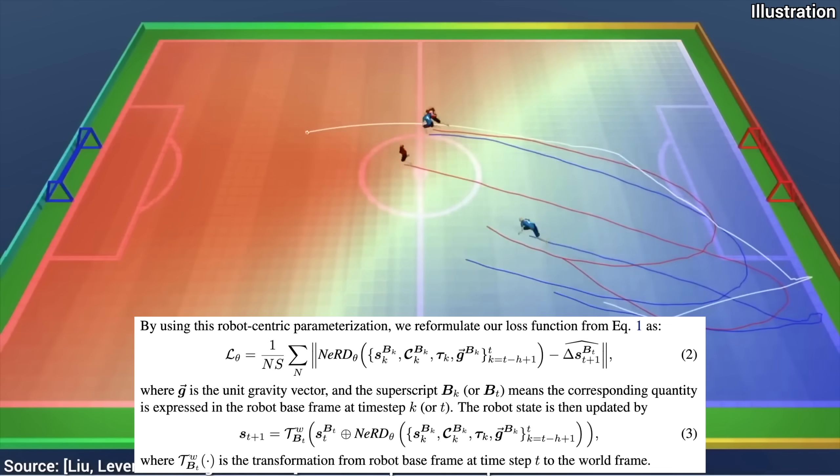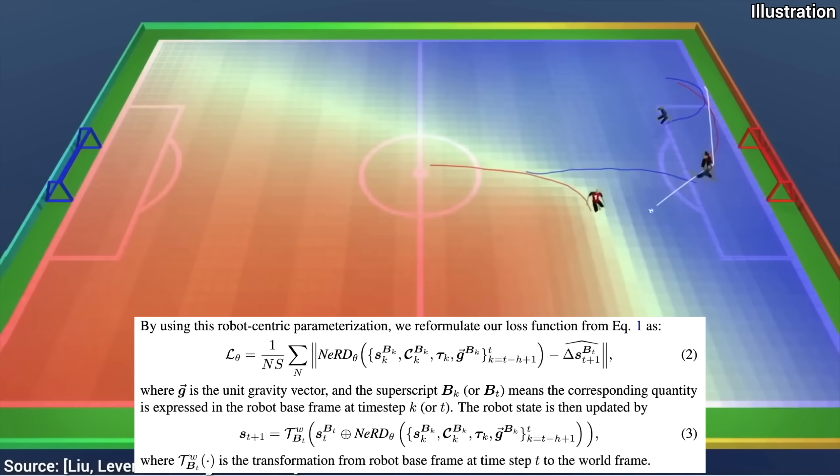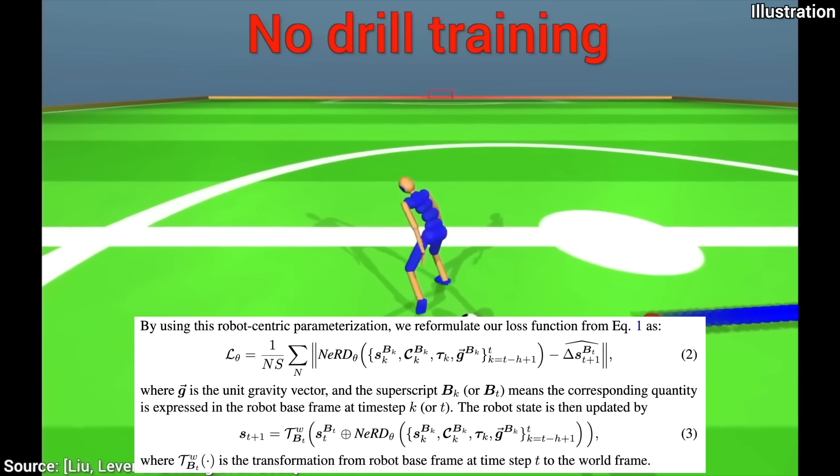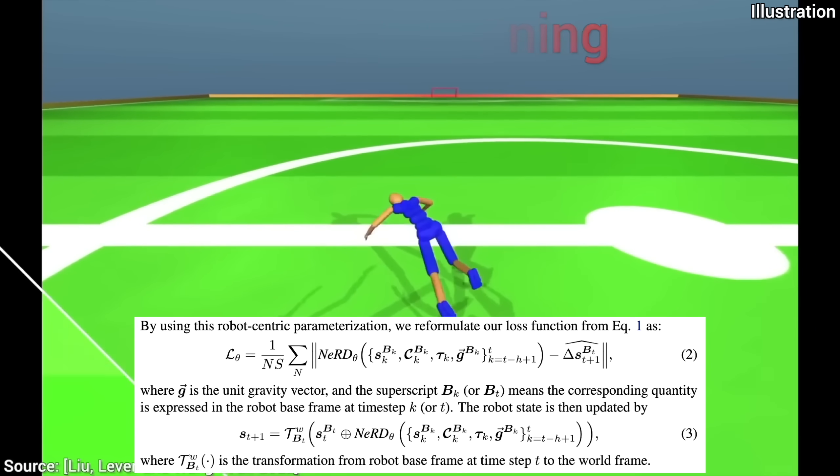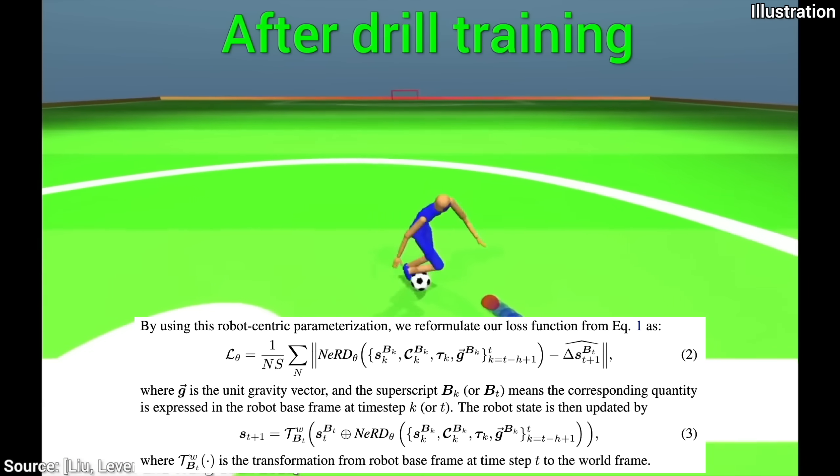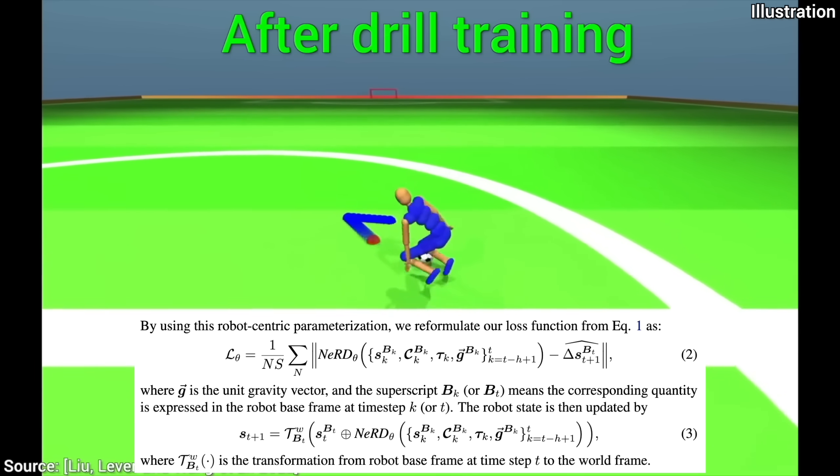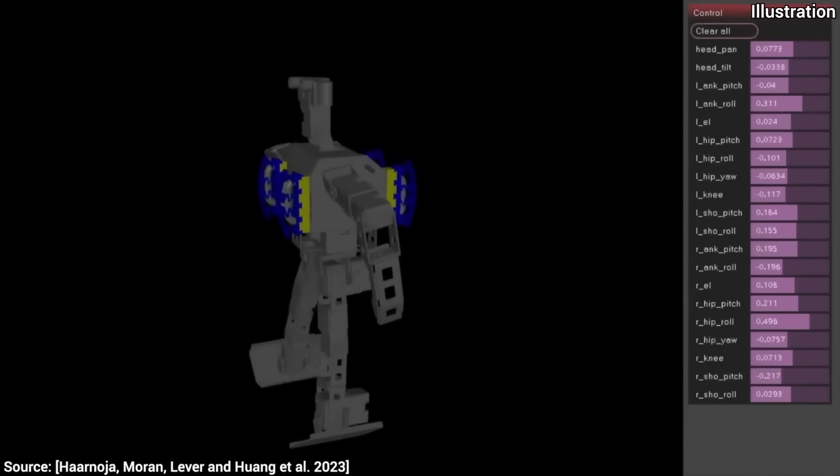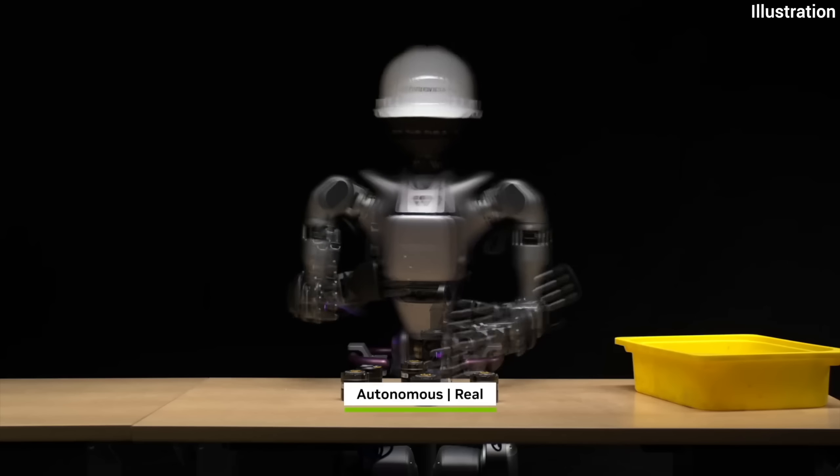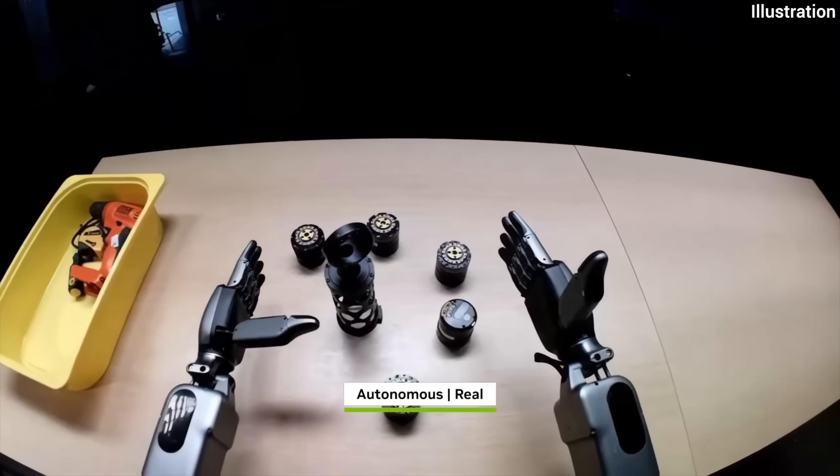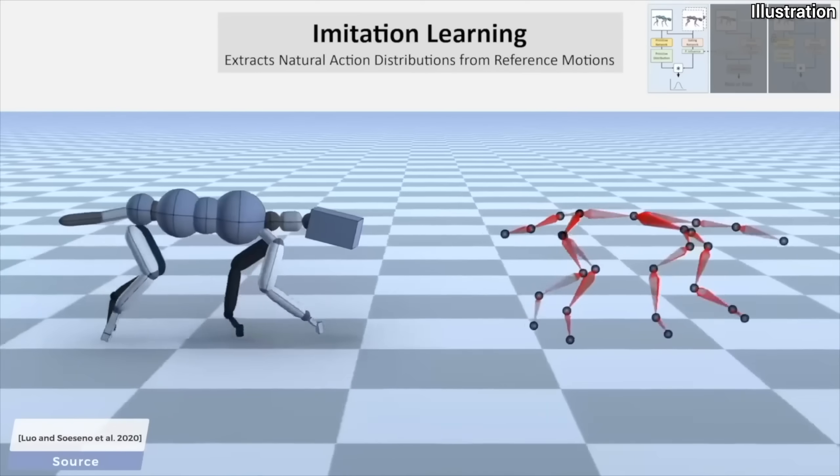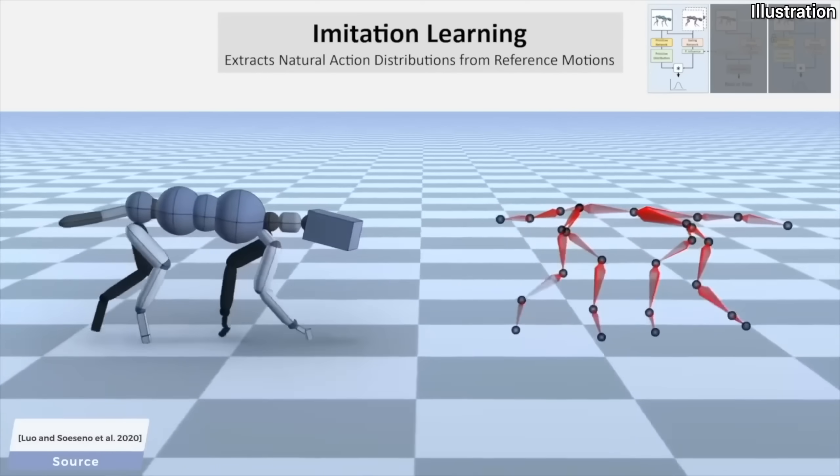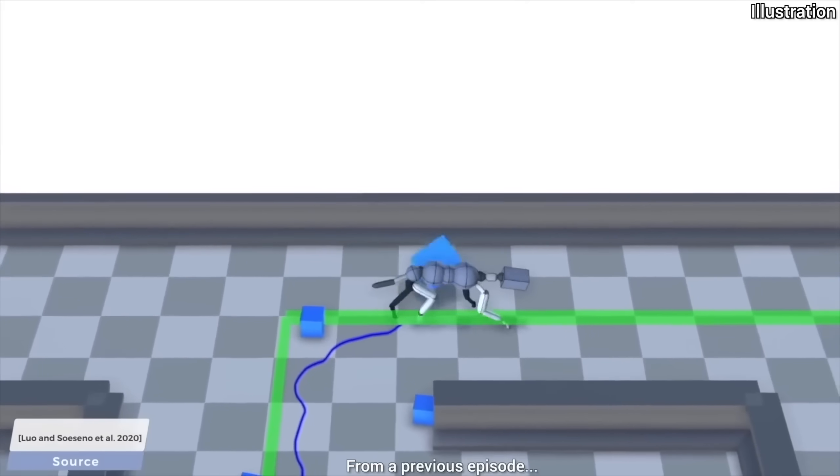This paper describes in detail how nerd learns to predict the next change in the robot's state. First, it applies motion, but it does it in the robot's own coordinate frame. Then, in the next formula, it transforms it back to world coordinates. Okay, so what does that mean? You see, the robot learns physics the same way you would learn to move through a dark room. You only feel the changes relative to yourself. So, you turn left, you go forward, and then you figure out where you ended up in the room afterward. That is so cool!